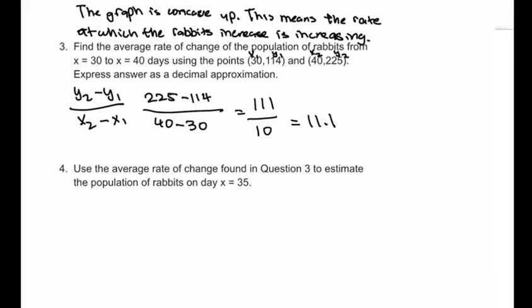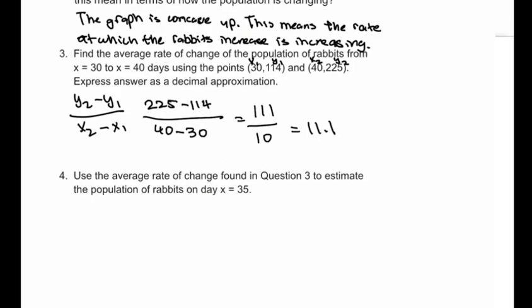Next, we need to use the average rate of change we found in question 3 to estimate the population of rabbits on day x equals 35. So we need to choose two points. We can do 30 comma 114 and 35 comma y2. And then label the points.